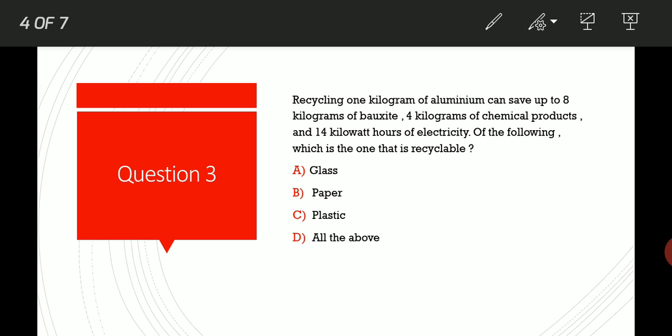The next question is: Recycling one kilogram of aluminum, recycling means using one product again, can save up to 8 kilograms of bauxite, 4 kilograms of chemical products and 14 kilowatt hours of electricity. Of the following, which is the one that is recyclable?